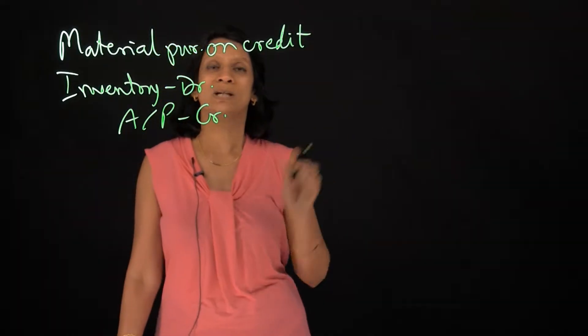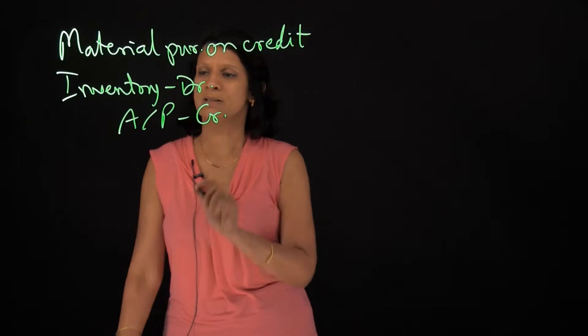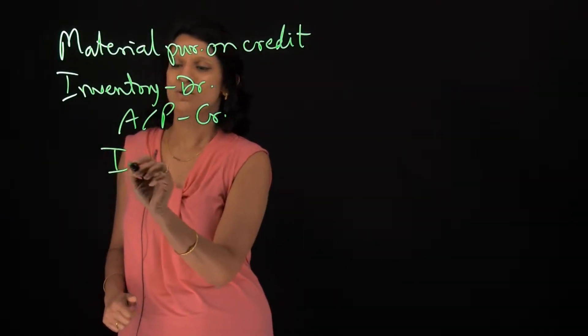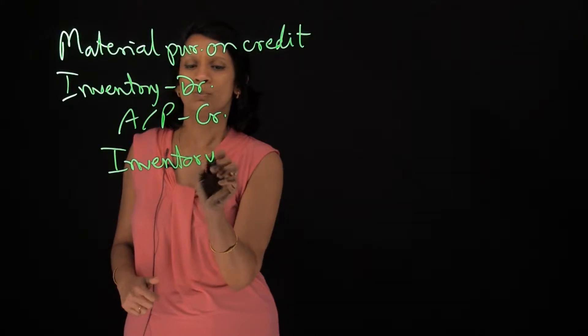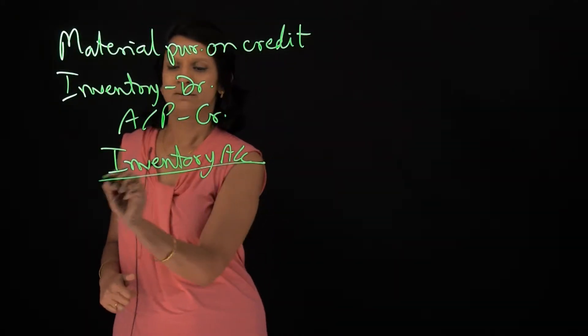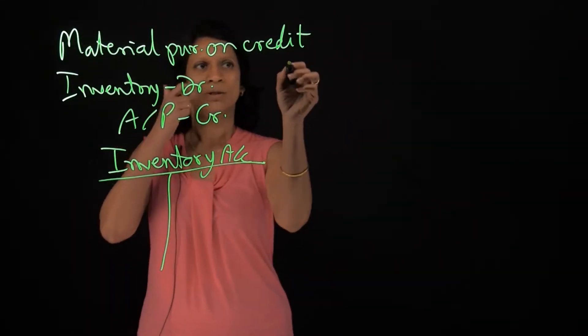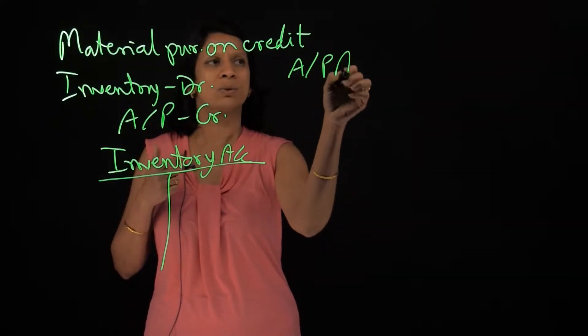Now how do I move this to a T account so that at any particular time, I know how much inventory I have and how much do I owe to a particular supplier. So this is my inventory account and this is my accounts payable account.